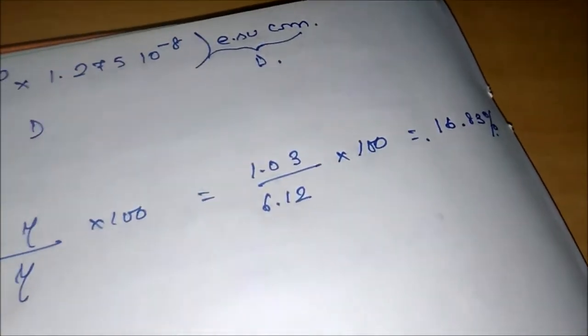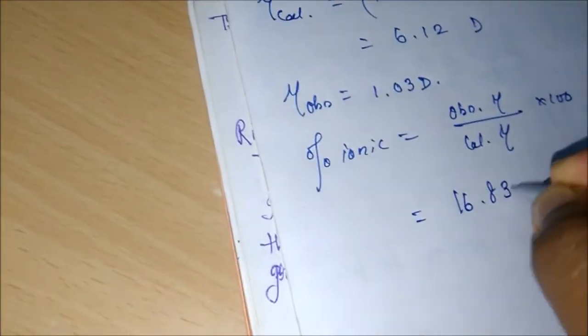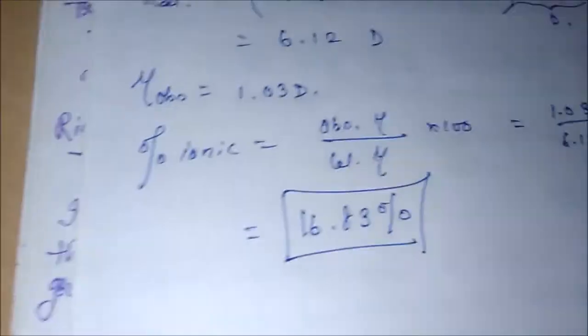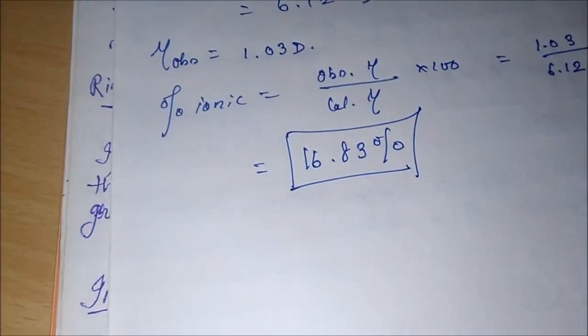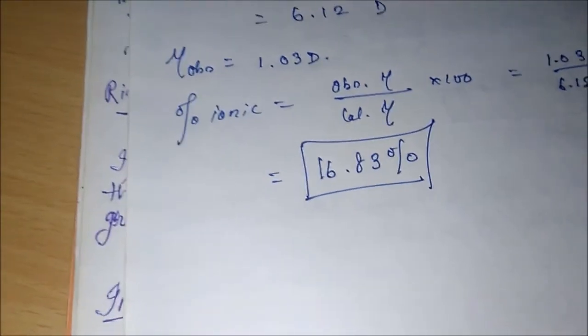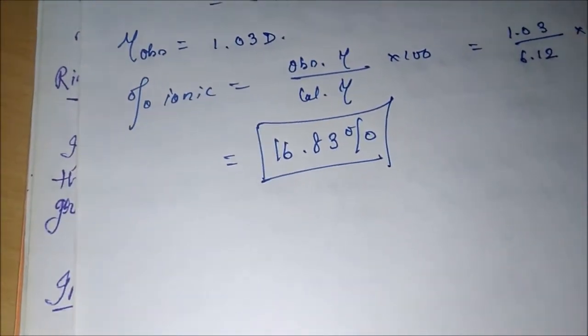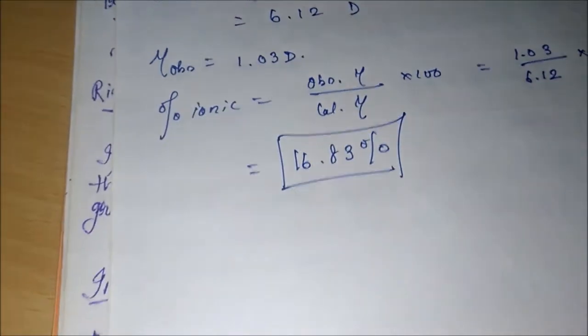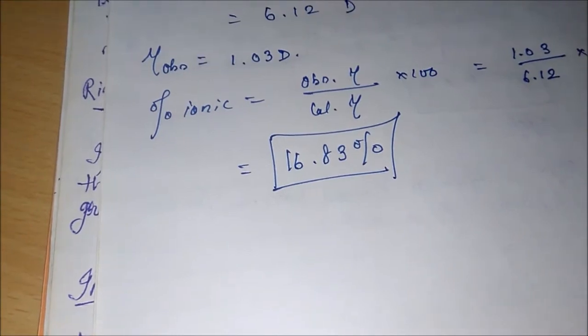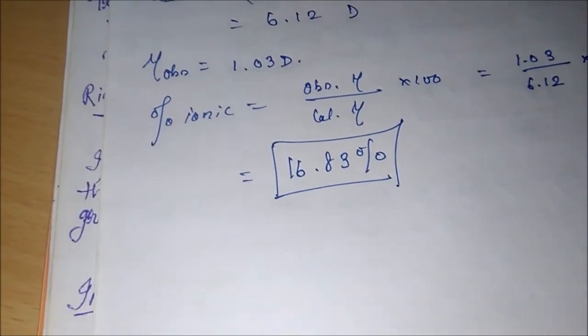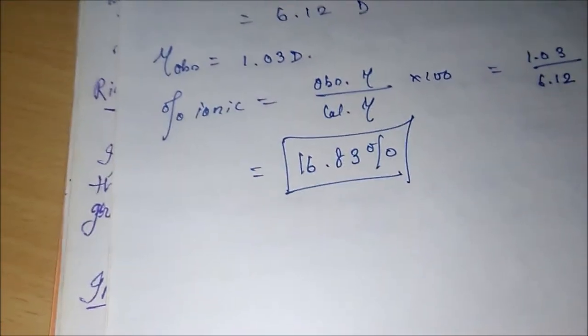Let me just calculate and put the value. So I have calculated it and it comes to 16.83%. Let me write it down here—16.83%. So you must be thinking, okay, wait a second, that means you are telling me that more than 80%—actually if you minus 16.83 from 100, you will probably get around 83%—of that is covalent.